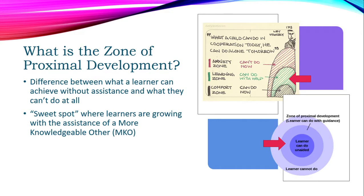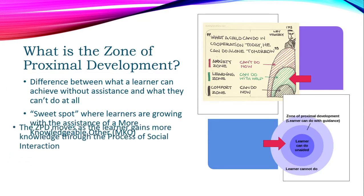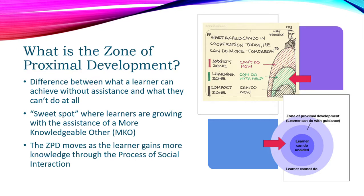I like to think of the ZPD as the sweet spot where learners are growing with the assistance of a more knowledgeable other — another term Vygotsky coined, known as MKO. An MKO is anyone who can teach someone else how to do something because they already know about it. The ZPD is actually a moving, living thing: you start with what you can do, you learn with someone else and then can do it independently, and that becomes your comfort zone. Then you learn something harder with help, master it independently, and add that to your comfort zone as well.